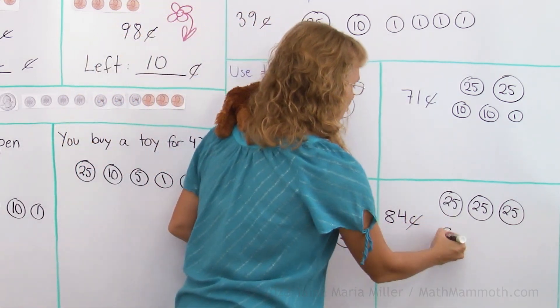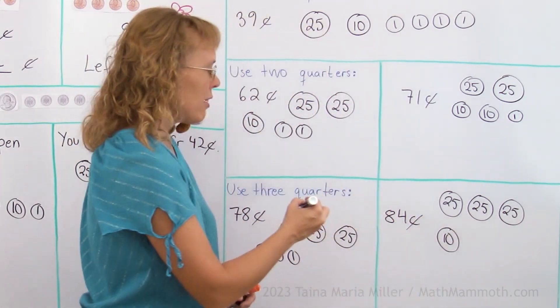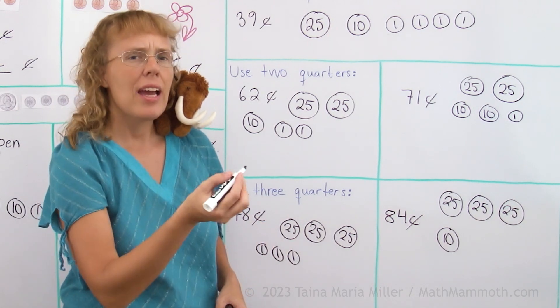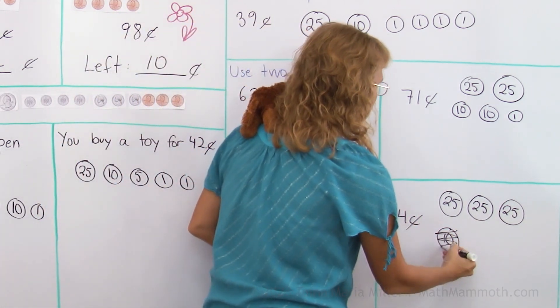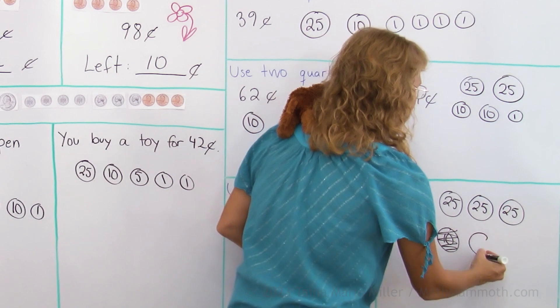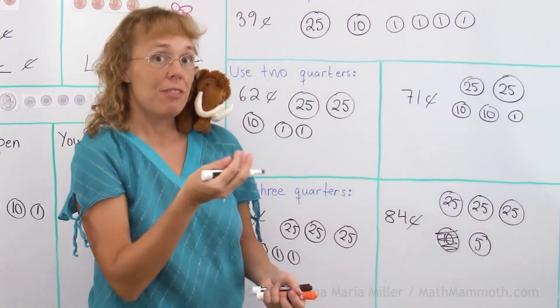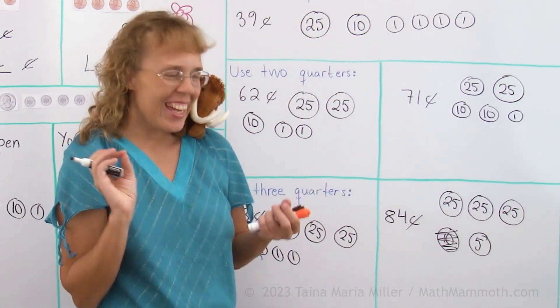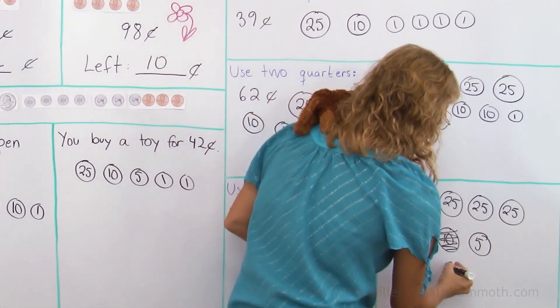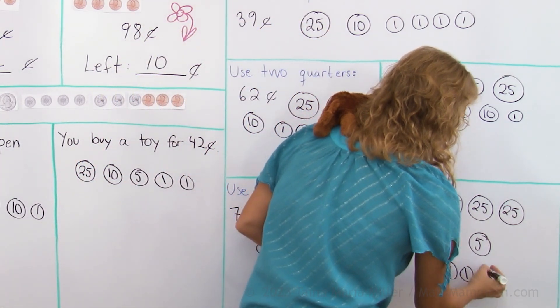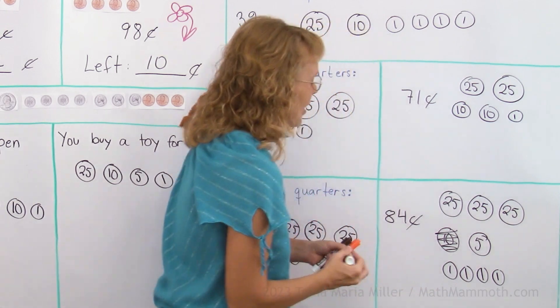Now would I use a 10? 75 and 10, 85? No, no, no, I can't use that, that's too much. So therefore, I will just use a nickel. 75 and 5 is 80, yeah, and now I just need my four pennies. And all done.